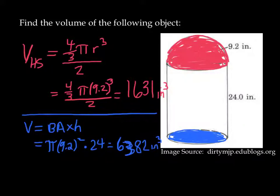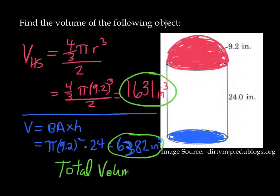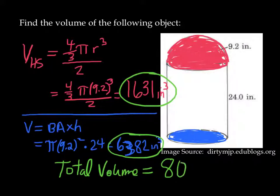We've got two amounts now, so we can just add them up to get a total volume for the entire object. So 1,631 plus 6,382 gives us approximately 8,013 cubic inches. There is a bit of error in that final answer because I rounded both interim steps. I recommend against rounding interim steps, as there may be an error in my final answer.